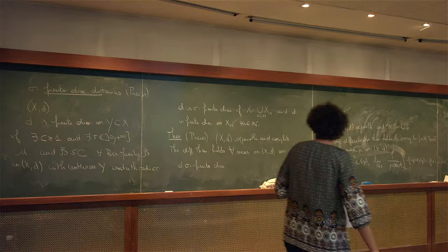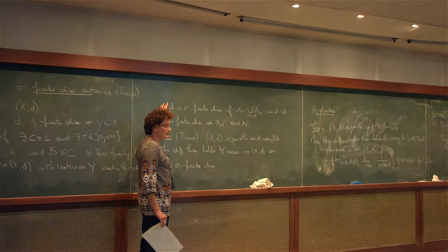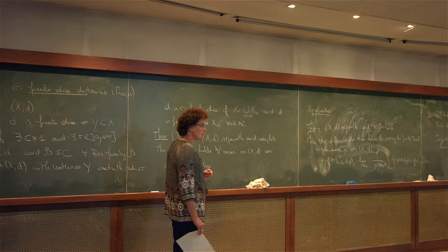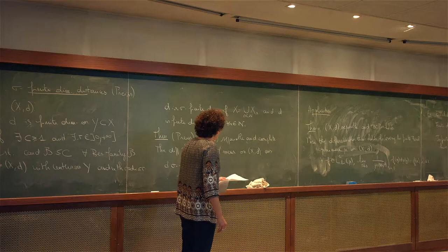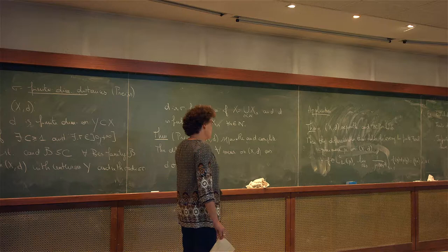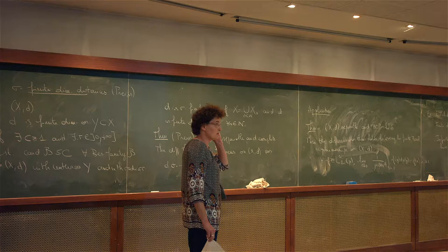Examples of sigma-finite dimensional distances are Riemannian distances on Riemannian manifolds of class at least C^2, or assume smooth. Riemannian distances are sigma-finite dimensional. Now my goal is to try to see if there are other examples that satisfy any kind of properties, because it turns out that asking for BCP is quite a strong condition on the metric space.